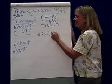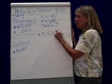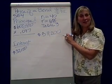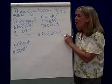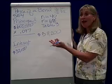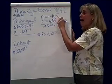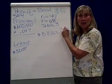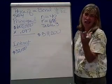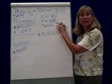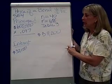So if I said to you: would you rather have $58,200 today, or would you rather have $600,000 twenty years from now? You'd say, 'I don't care — same amount,' given these assumptions.